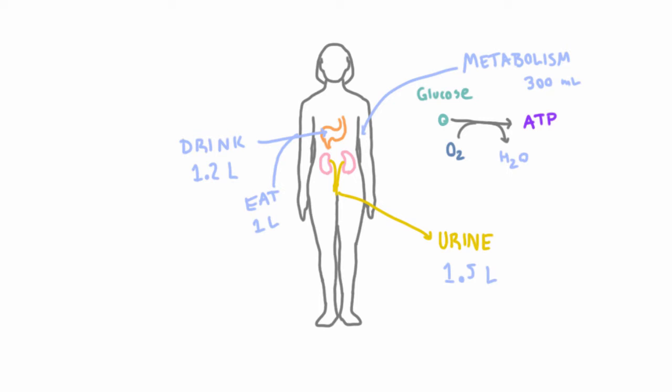And now how does water leave the body? Well we already talked about the main way, which is urine. We'll draw it in red to signify loss. So you lose about 1.5 liters of water to urine per day.